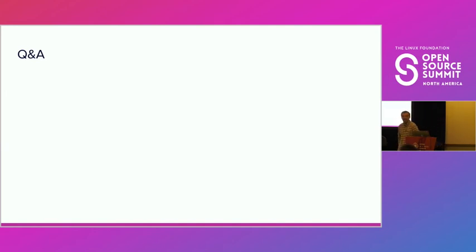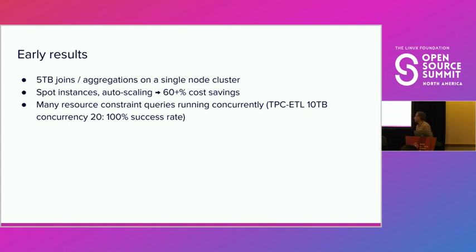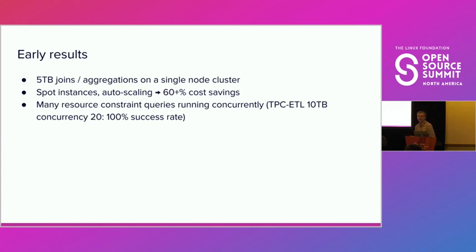Question: on the last slide, you mentioned 5TB aggregation on a single-node cluster — does the node have to have 5TB of memory? No. With the new execution capabilities, we are able to split a query into multiple tasks and run each task independently and iteratively. You just need one node with 128 GB of memory. You schedule one or a couple of tasks at a time, not all tasks simultaneously as the old execution model required.